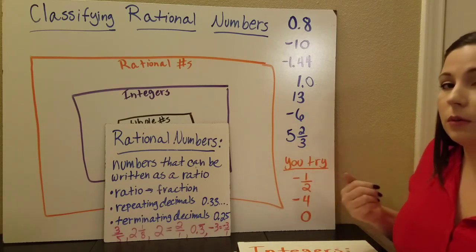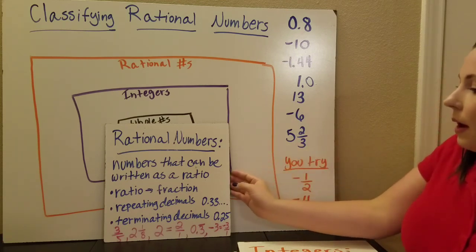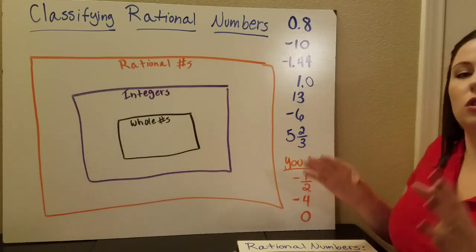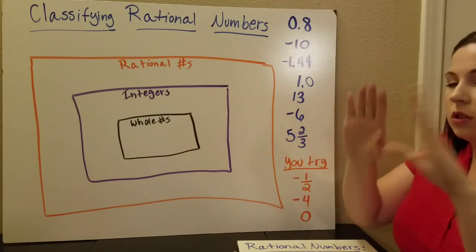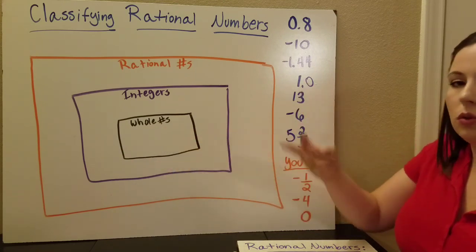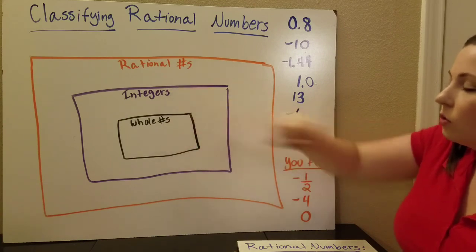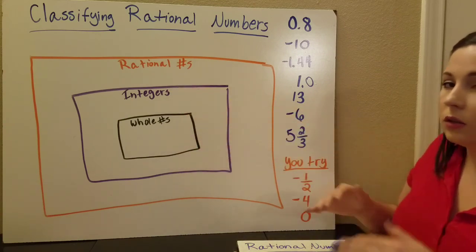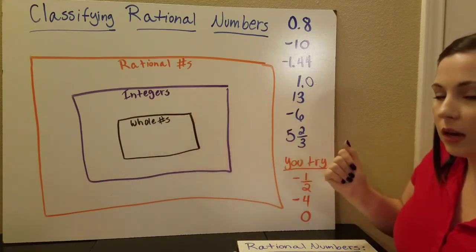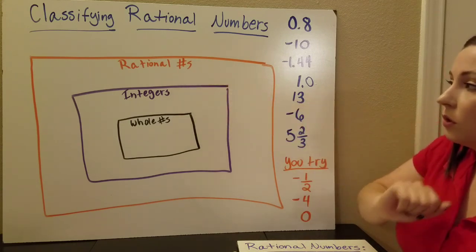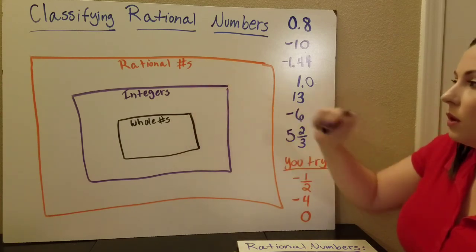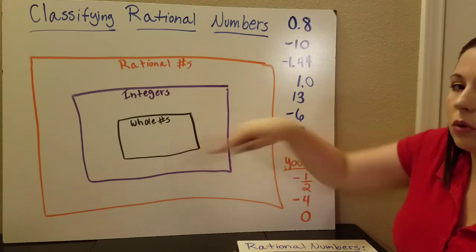So those are the three types of numbers we have, and now we'll talk about how they are organized. Your smallest group — your most specific type — is the whole numbers: zero, one, two, three, and so on. The next largest group is the integers, which includes all the whole numbers plus those negative numbers. Then you've got your rational numbers, which are the whole numbers together with the integers, and then anything that doesn't fit into either the integer group or the whole number group.